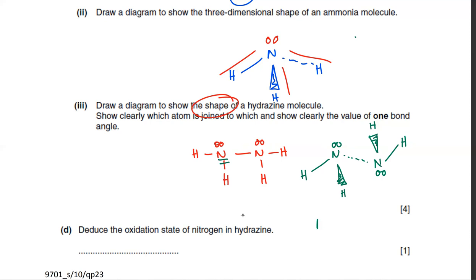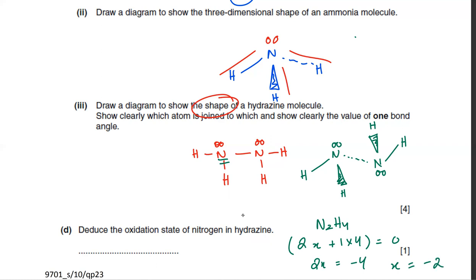To find the oxidation state of N in N2H4: H is +1 and there are four of them (+4 total), the overall charge is zero, so 2x + 4 = 0, giving x = -2. The oxidation state of nitrogen in hydrazine is -2.